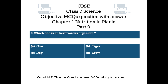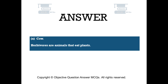Question number 8: Which one is a herbivorous organism? Option A: cow. Option B: tiger. Option C: dog. Option D: crow. The right answer is option A — cow. Herbivores are animals that eat plants.